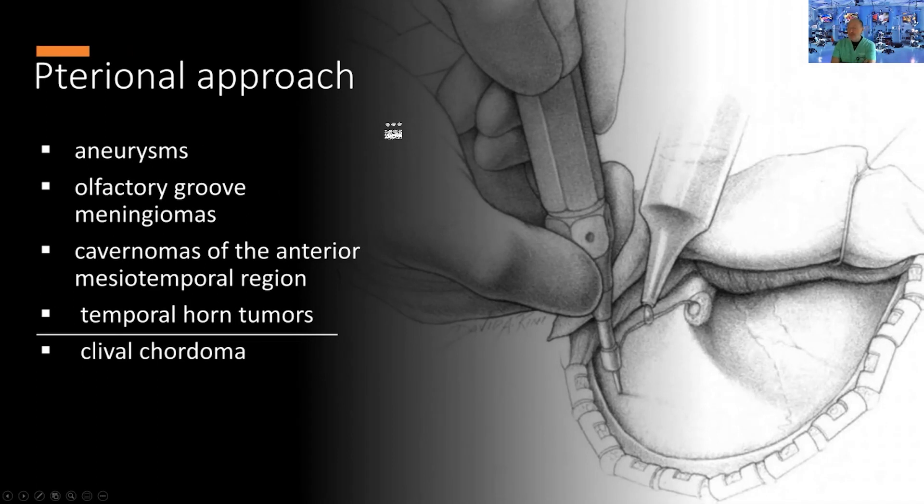The pterional approach is the most popular neurosurgical approach, popularized in the 1960s and early 1970s. It's very good for many pathologies: aneurysms, olfactory groove meningiomas, cavernomas of the mesiotemporal region, temporal horn tumors, and clival chordomas.